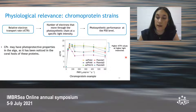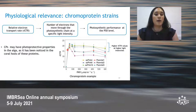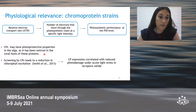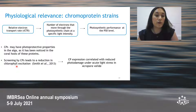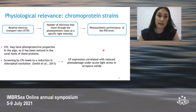For the case of the chromoprotein strains, our results of higher RETR values at higher light intensities support the idea that the chromoproteins might have photo-protective properties in the algae, as these activities have been reported before in the coral hosts. For instance, in 2013, Smith showed that screening by the chromoproteins leads to a reduction in the chlorophyll excitation, because the chromoprotein expression was correlated with reduced photo damage under acute light stress in the coral Acropora valida.